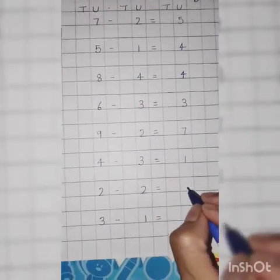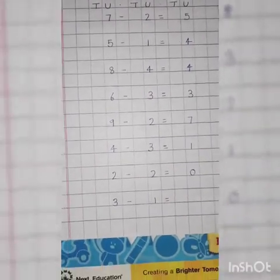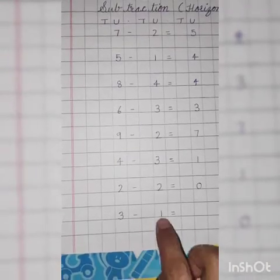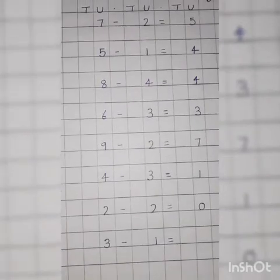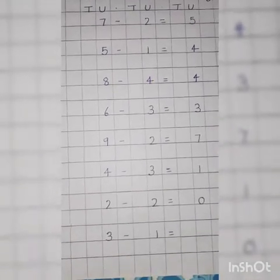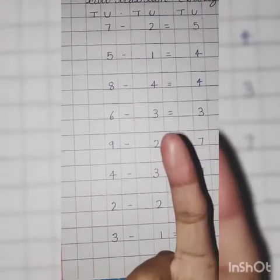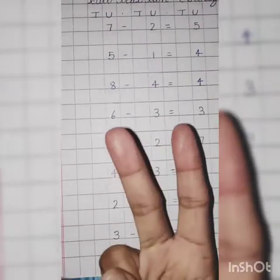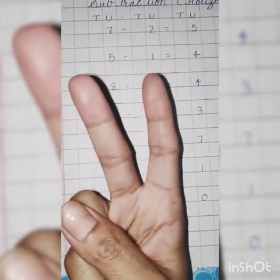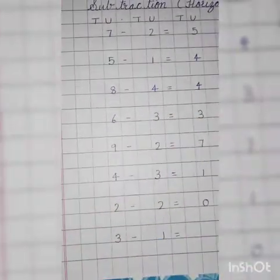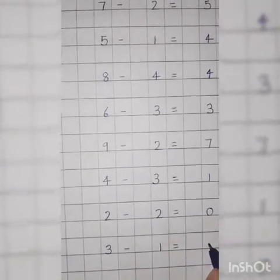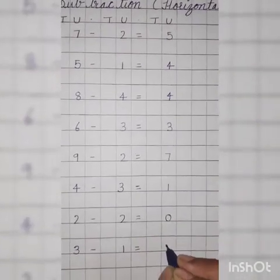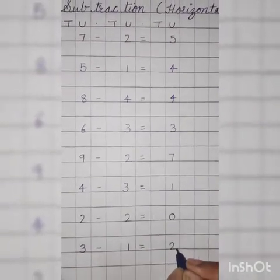Write 3. Very good. 3 minus 1. Throw 1. Count till 3. What comes after 1? 2, 3. How many fingers are left? 1, 2. So, answer is 2. Very good. Write down 2.